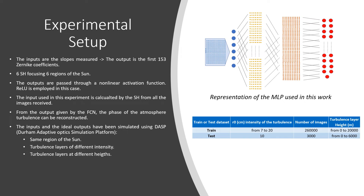The hyperbolic tangent function is used as the activation function for all layers. The neural network was trained with different topologies before the most adequate was selected. The network was optimized with the Adam optimizer algorithm, using the mean square error as the loss function.